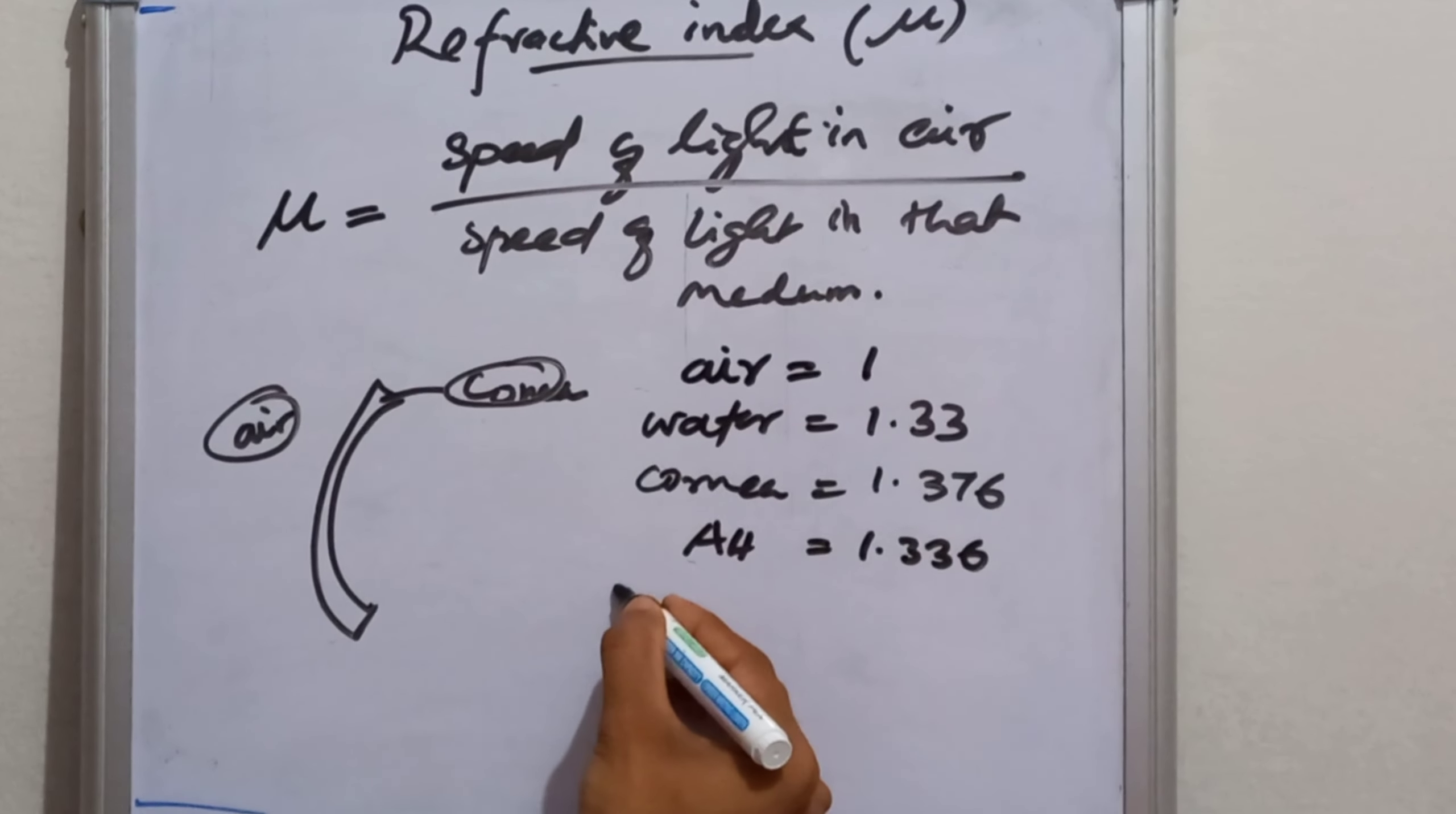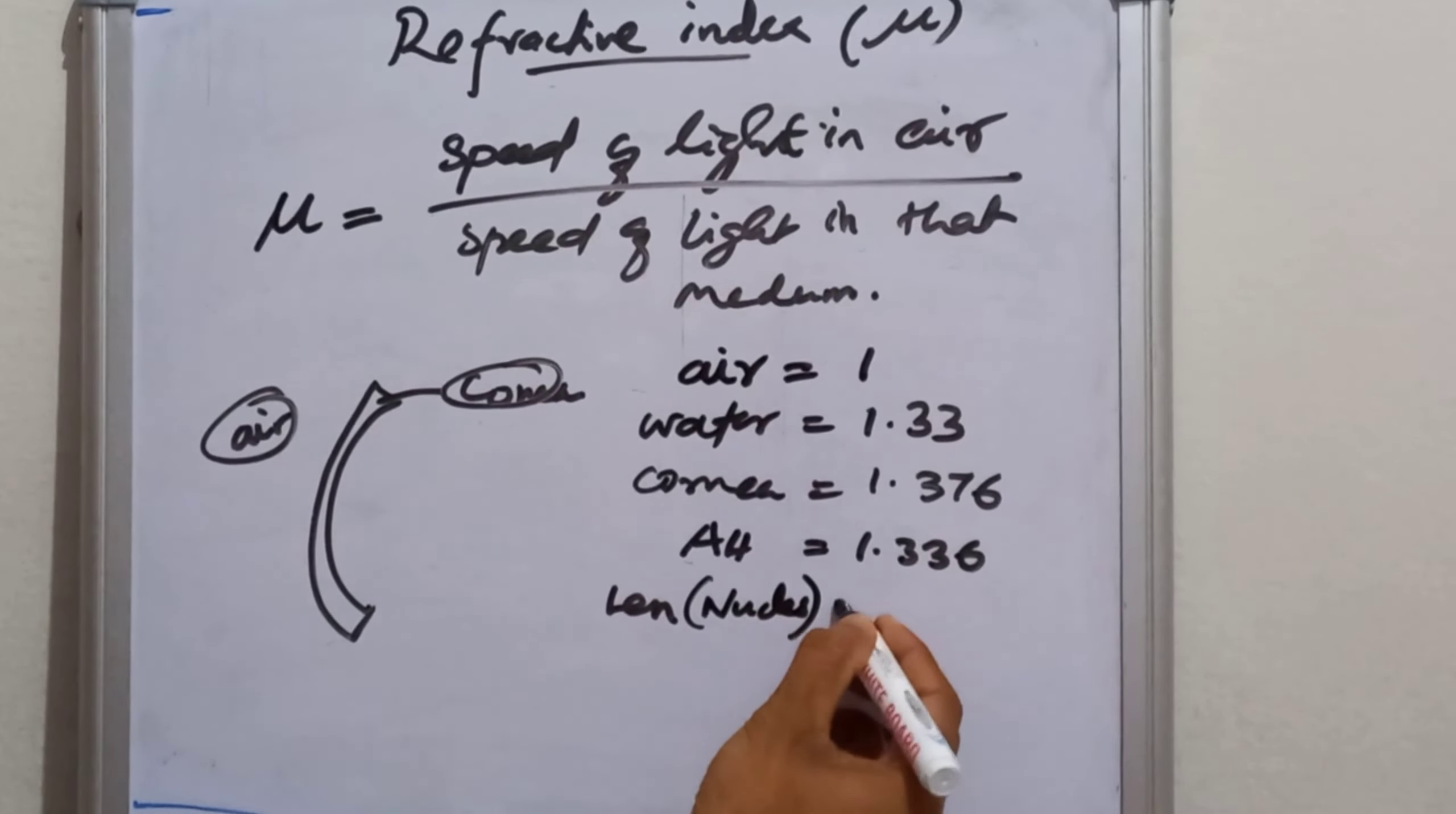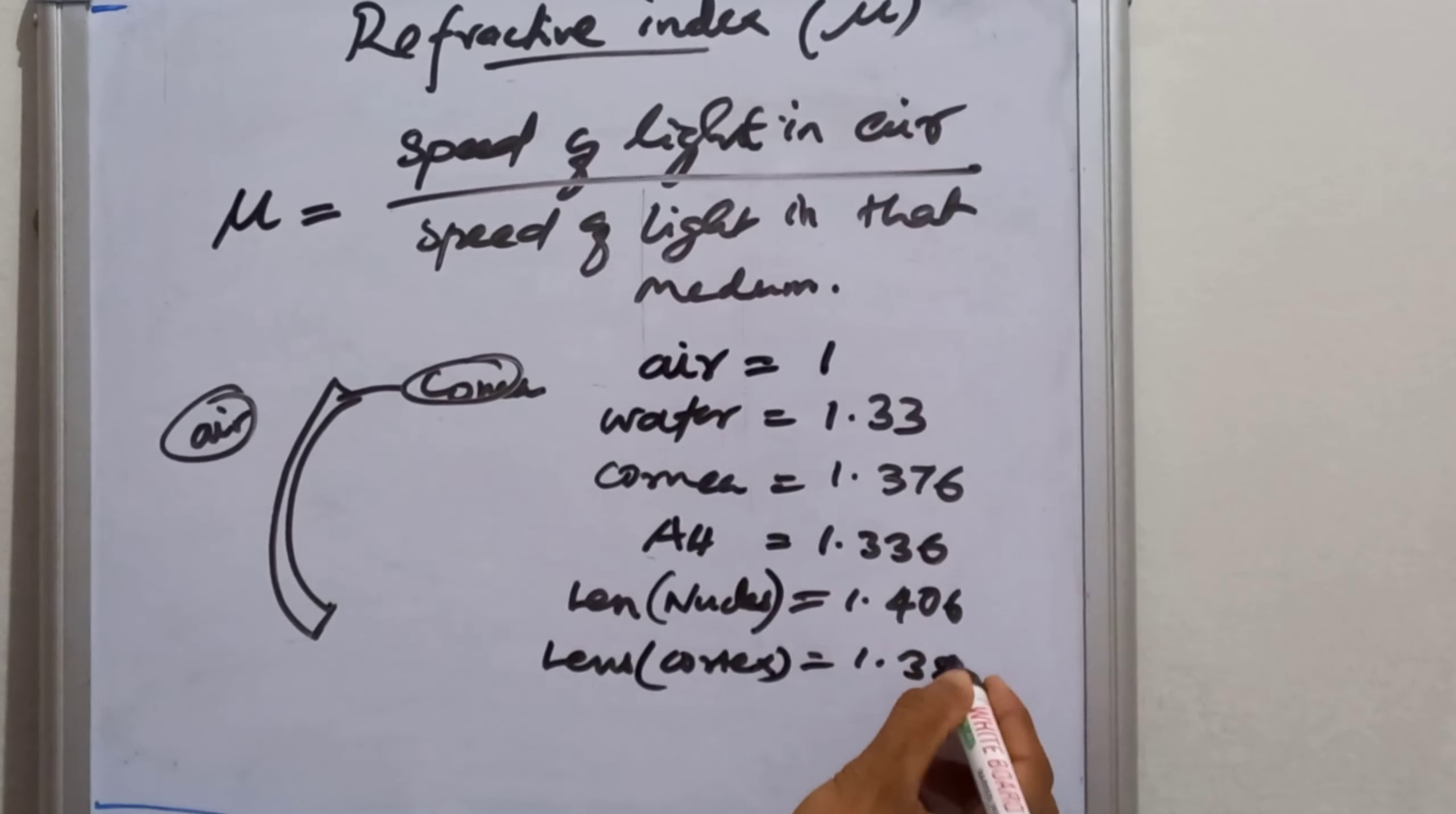The lens has two structures we will consider. First one is the nucleus, lens nucleus that is 1.406, and lens cortex that is 1.386.